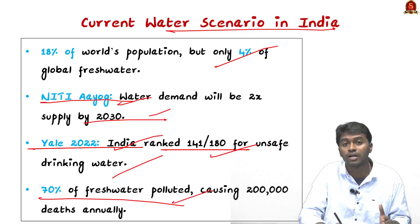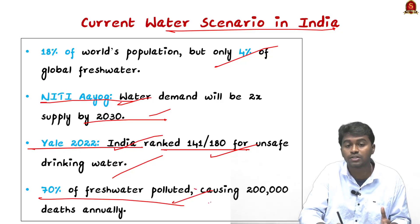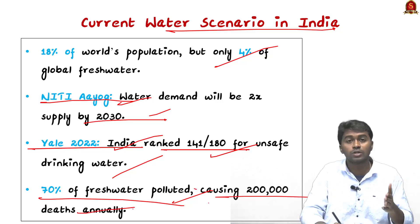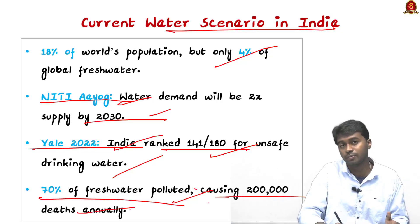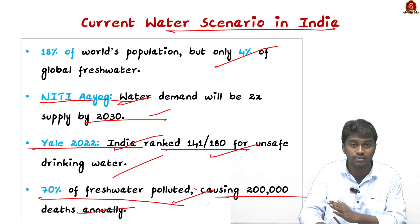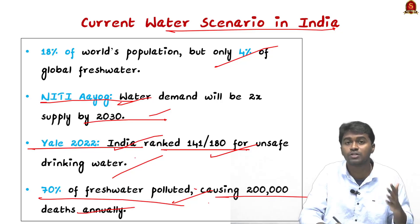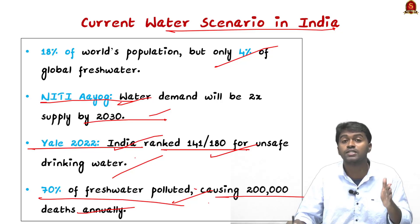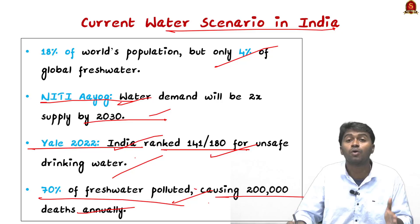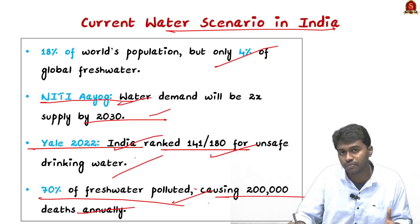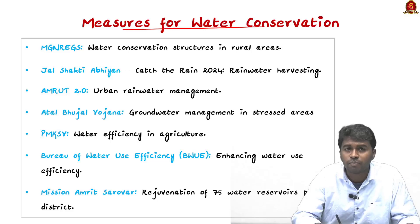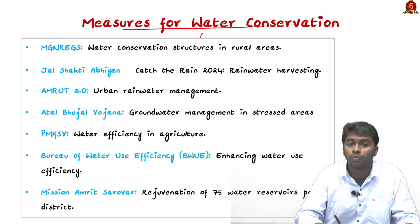Yale University also found that 70 percent of India's freshwater is polluted, directly or indirectly causing around two lakh deaths annually. According to World Bank estimates, if groundwater depletion continues at this pace, in another two decades nearly 60 percent of districts in India will face severe groundwater scarcity.